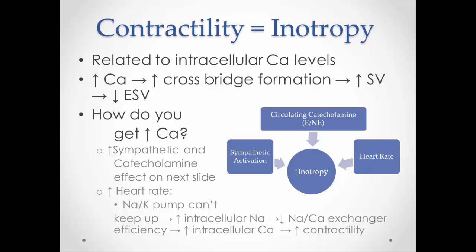So basically, how do I get to the point where I have a higher amount of calcium in that cell? The sympathetic nervous system and the catecholamines — that is, norepinephrine and epinephrine — are going to have an effect on that, but I'll save that for the next slide. On this slide, I'll just talk about heart rate. An increase in heart rate can actually increase inotropy.